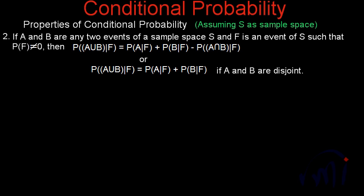In this video we are going to learn about the second property of conditional probability. It states: if A and B are any two events of a sample space S, and F is an event of S such that P(F) is not equal to 0, then P(A∪B|F) = P(A|F) + P(B|F) − P(A∩B|F). If A and B are disjoint, then P(A∪B|F) = P(A|F) + P(B|F). This is the second property and now we are going to prove it.